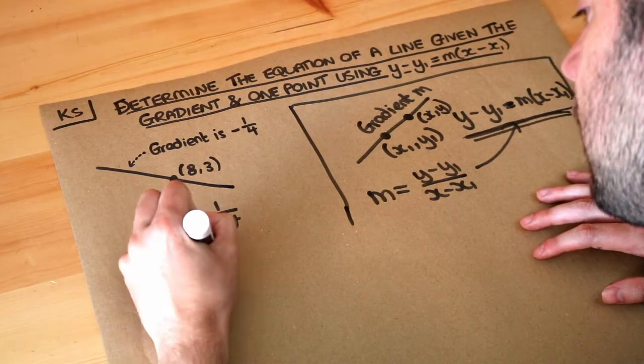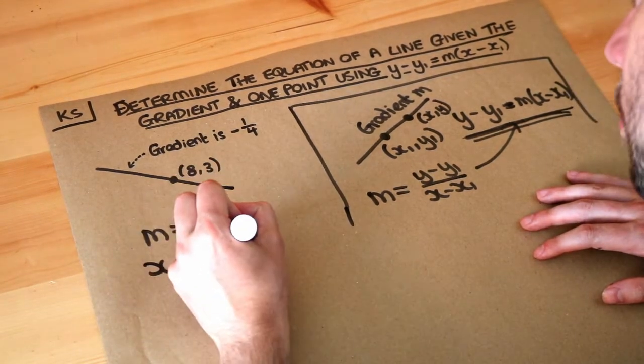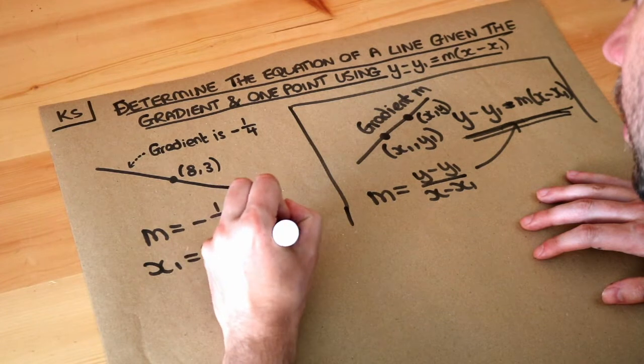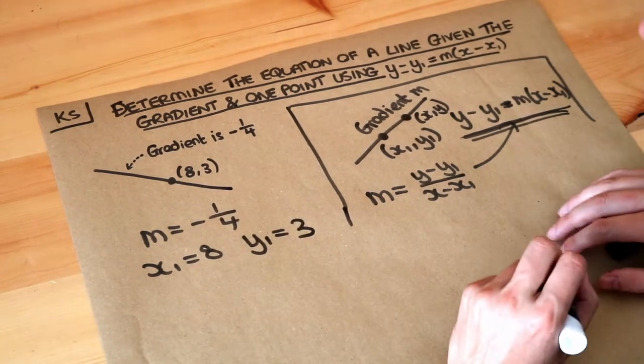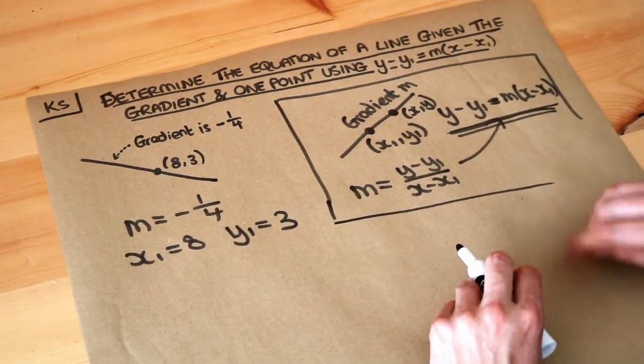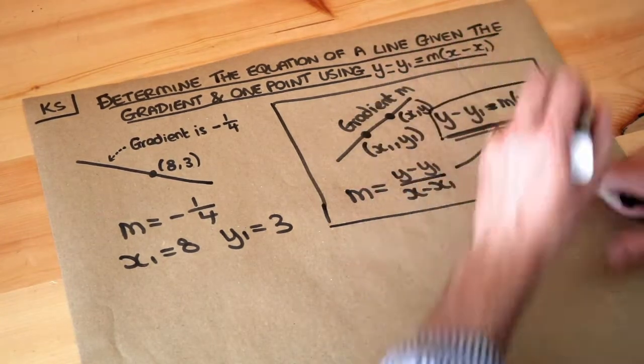So the x1 is 8, the y1, the fixed point that we're using, the y value is 3, and then all we need to do is we just need to shove it into this formula here.